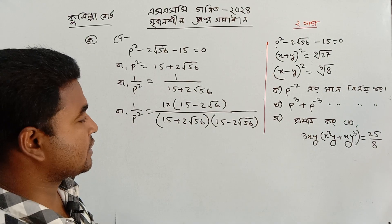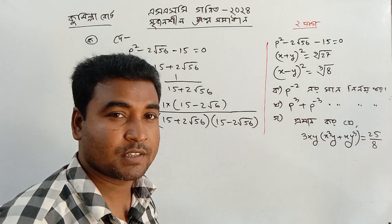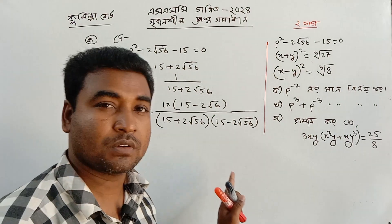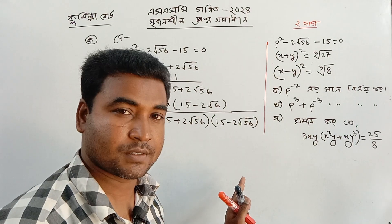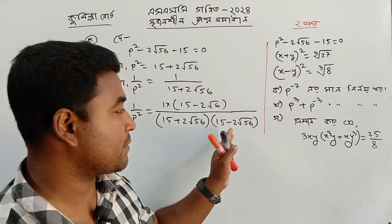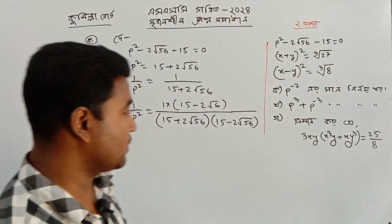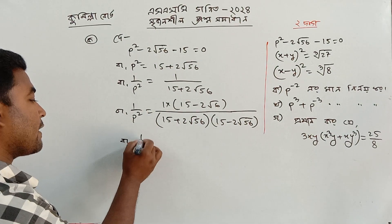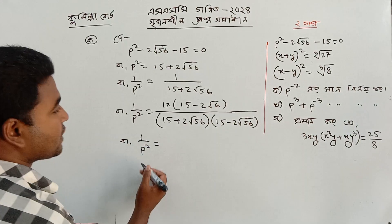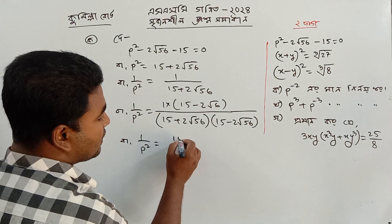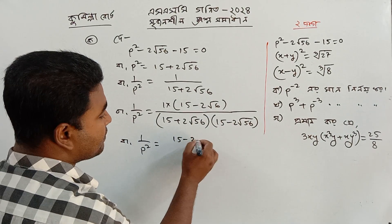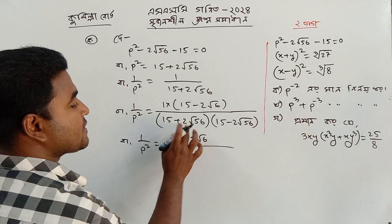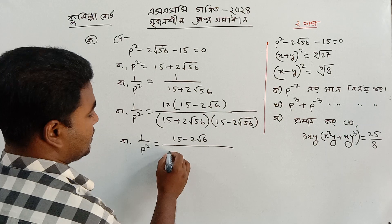This is the conjugate number of 15 plus 2 root 56. This is the conjugate number of 15 plus 2 root 56. So: 1 by P square R equal to 15 minus 2 root 6, by a plus b into a minus b.